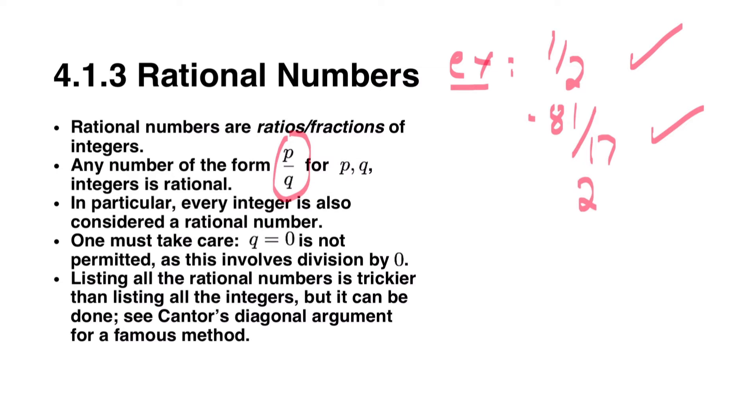Two is also a rational number. How can you write this as a fraction of integers? Well, it is itself an integer, so you can simply write it as two over one.